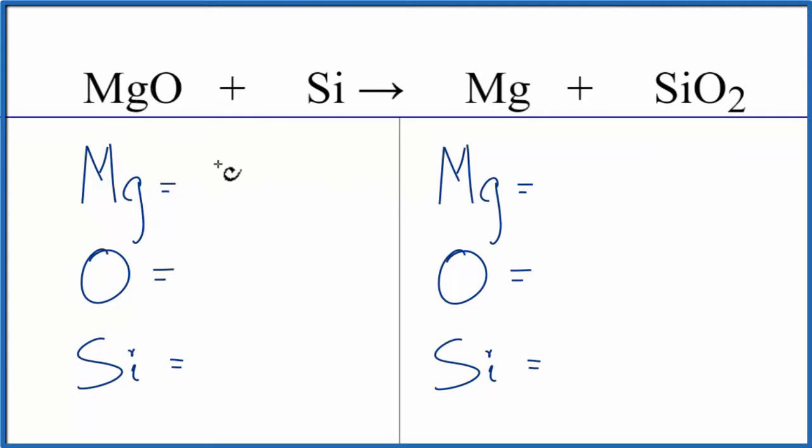Let's count the atoms up. We have one Mg, one oxygen, and one silicon. We have magnesium, one of those, oxygen's two, and the Si, the silicon, we have one of those.